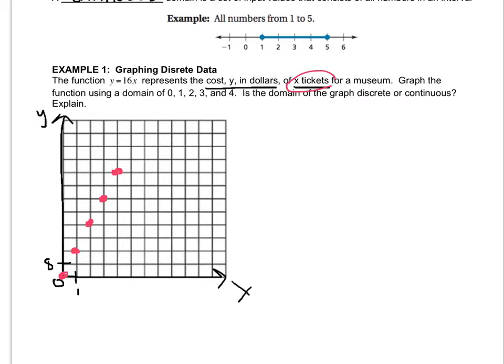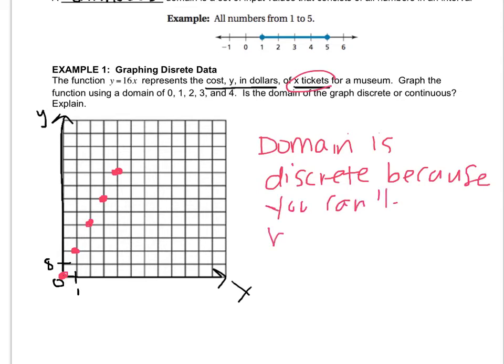I know we're so used to connecting dots because we've been graphing lines for so long. But we're actually not going to connect them because the domain is discrete. I'll say because you can't have a fraction of a ticket. I'm either having 1 ticket or 2 tickets or 3 tickets. I can't have a portion of a ticket.